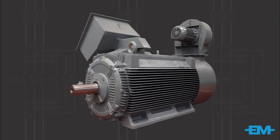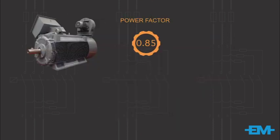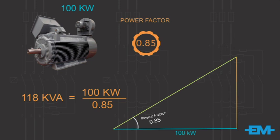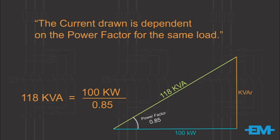A large electric motor might typically have a power factor of about 0.85 at full load. Let's say our motor is rated at 100 kilowatts and the power factor is 0.85. The electricity supply would have to supply 100 kilowatts divided by 0.85, which equals 118 kilovolt-amps KVA, to provide the 100 kilowatts to run the motor. That means they would be supplying 18% more electricity than they are charging for, which is why power supply measures maximum demand KVA — because the current drawn is dependent on the power factor for the same load, and the current drawn is calculated with KVA.